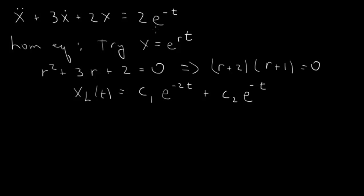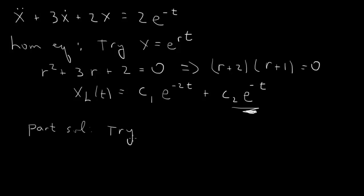So 2e to the minus t is a solution of the homogeneous equation. To find the particular solution, we have to try x equal to some unknown coefficient A, and we need to multiply the right-hand side by t — so A times t times e to the minus t.